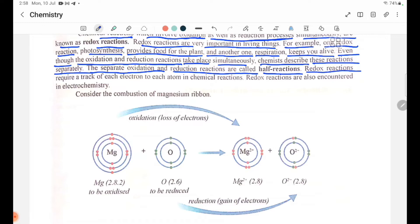Redox reactions require tracking each electron to each atom in chemical reactions. Redox reactions are also encountered in electrochemistry. Consider the combustion of magnesium ribbon.